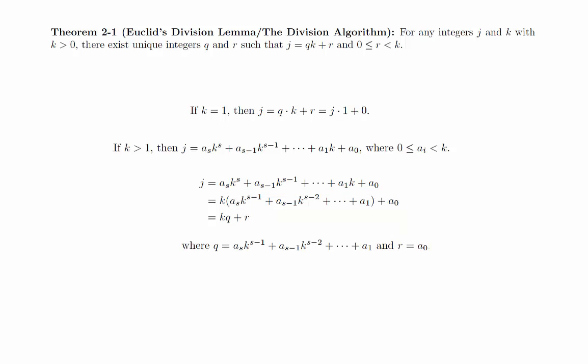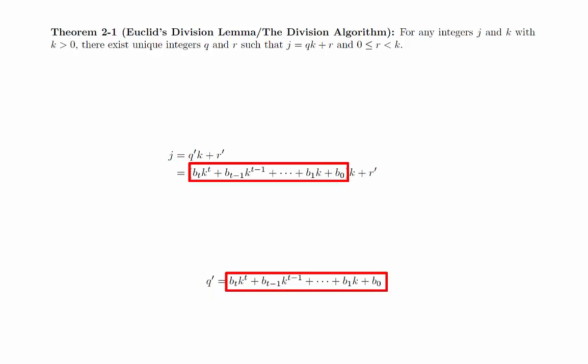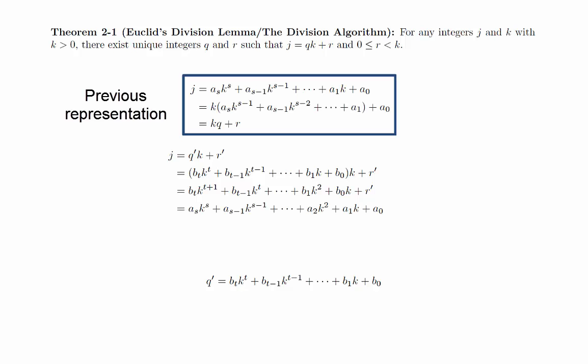We now need to prove that this representation is unique. Suppose we have a second representation of this type. We will write q prime in the base k and then plug it in. Notice that this is a representation of j in the base k. By the basis representation theorem, we know such representations are unique, so this must be the same representation that we started with.